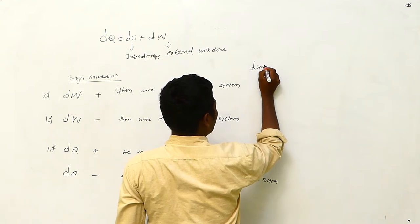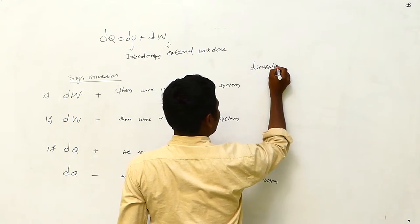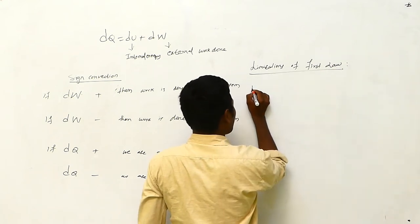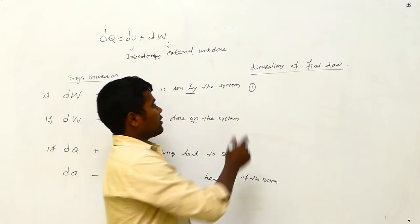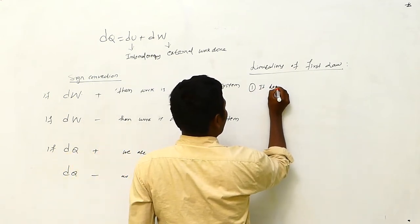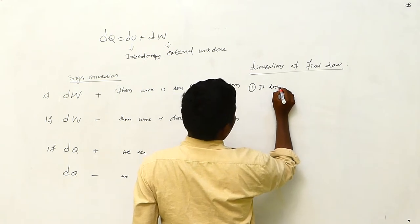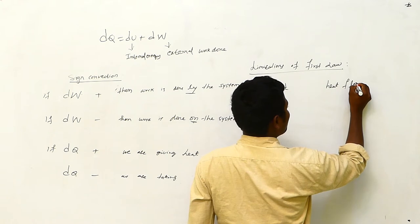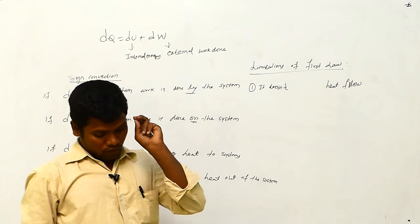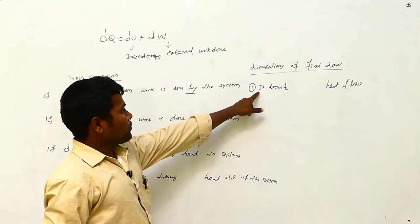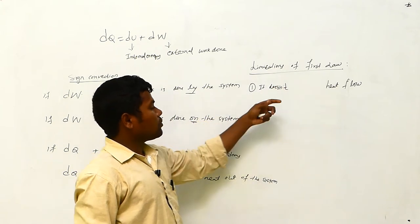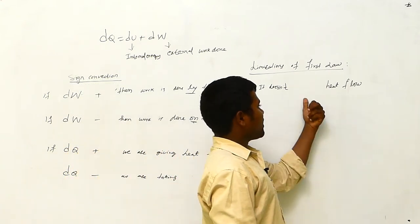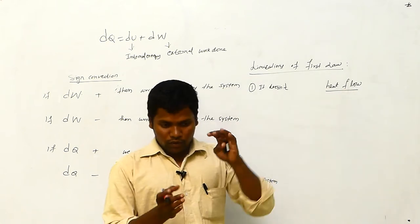Next, the limitations of the first law of thermodynamics. What are the drawbacks of the first law? The first limitation is that it does not explain heat flow — it cannot tell us how heat flows, from which point to which point.